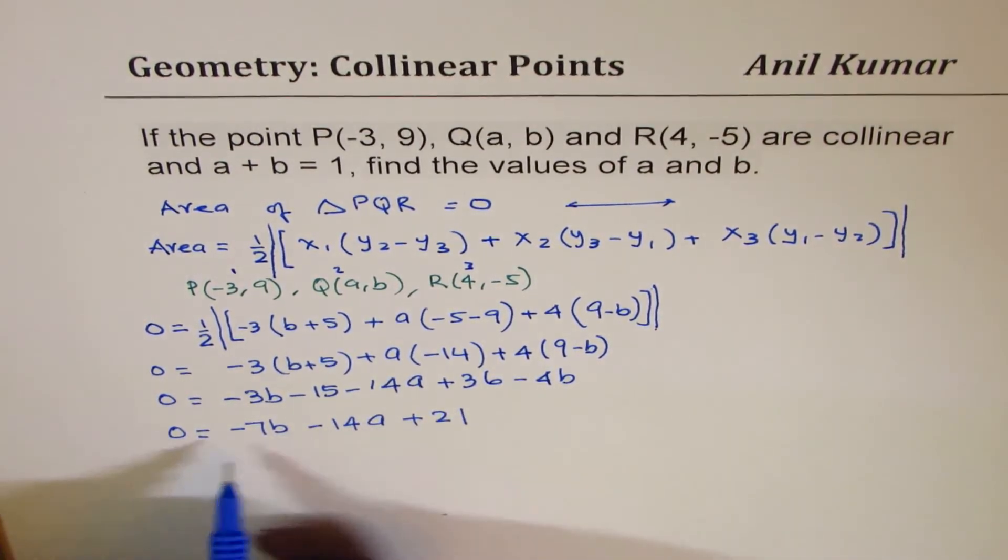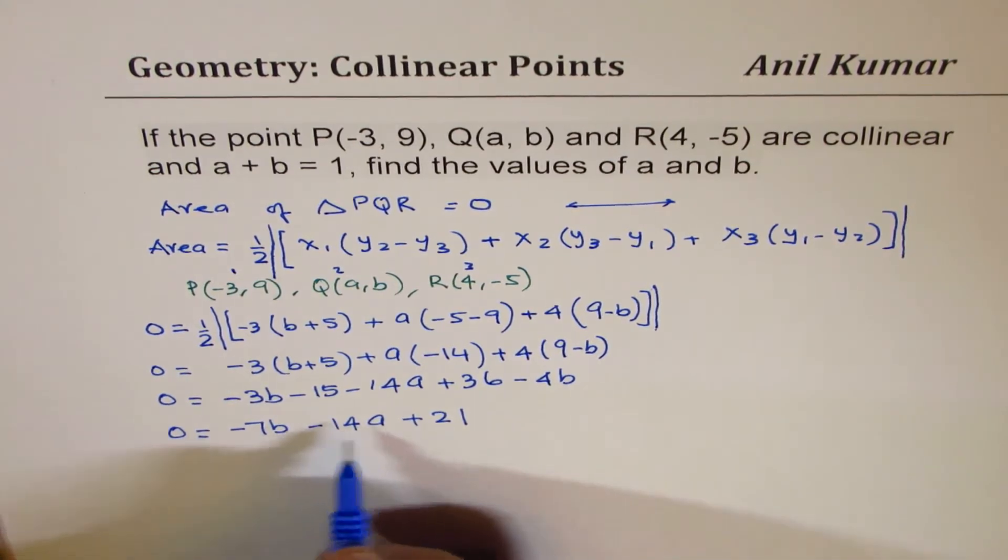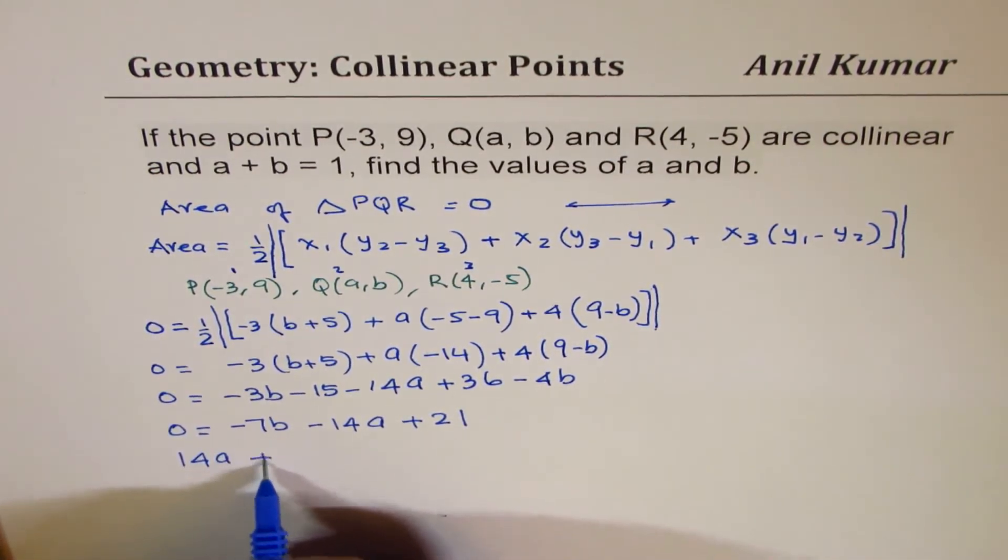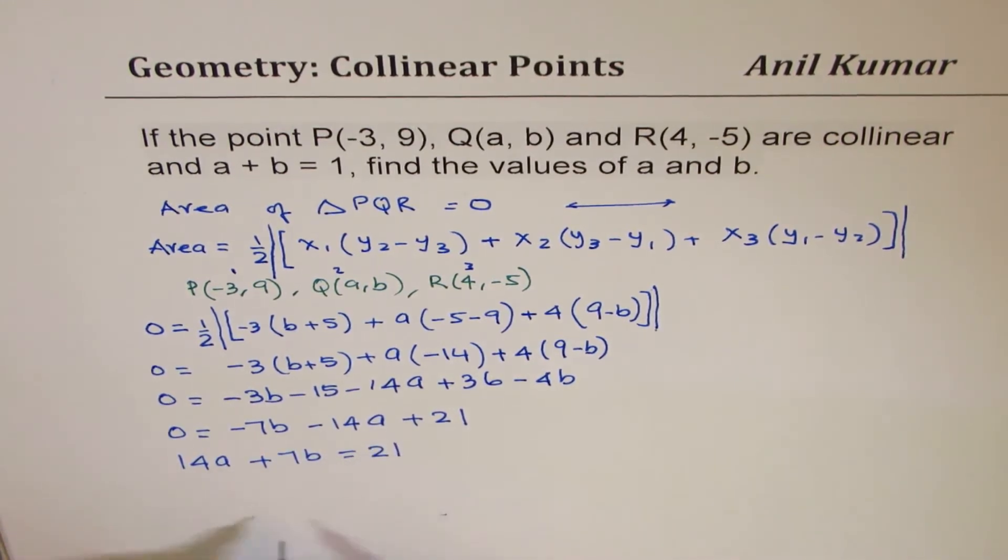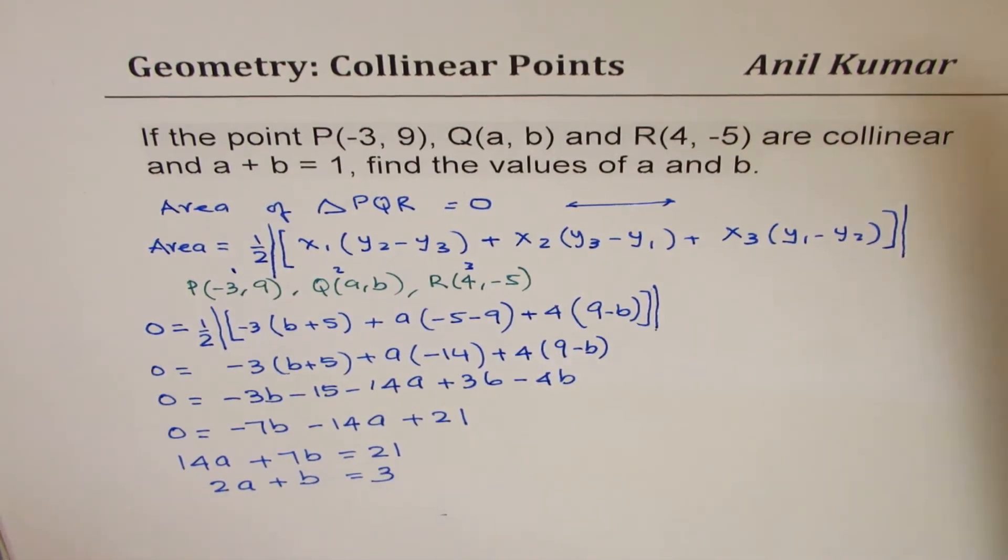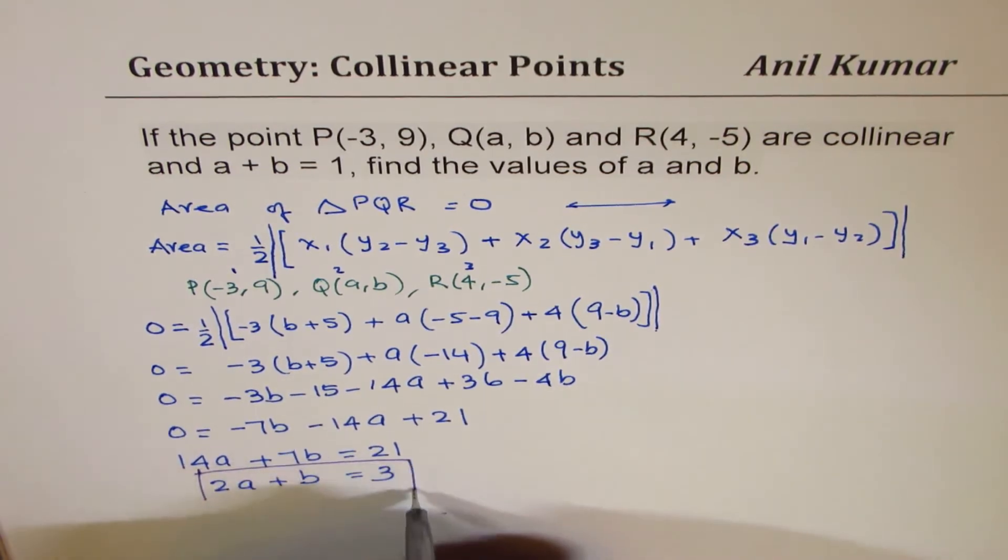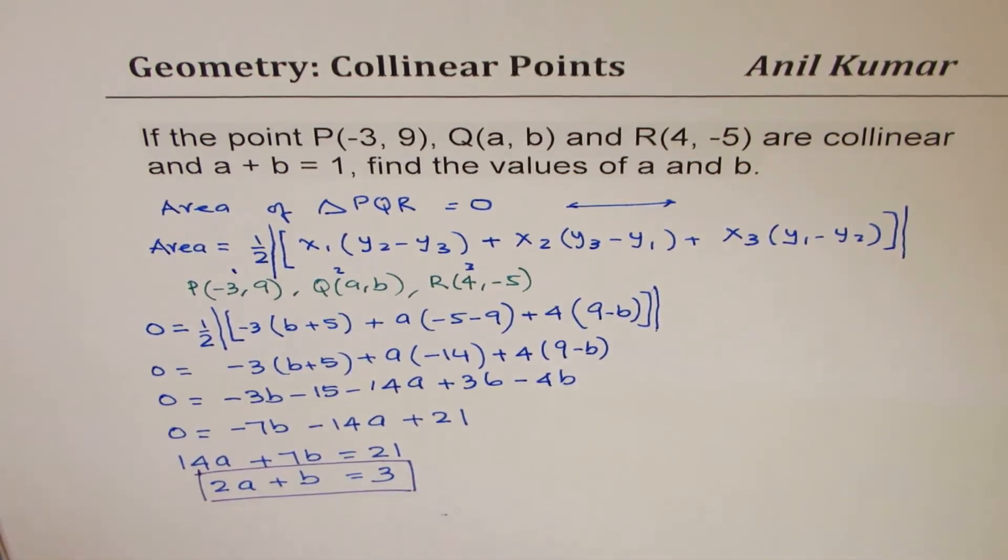Now we can rearrange bringing these terms to the left side. We have 14A plus 7B equals to 21. Dividing by 7, we get 2A plus B equals to 3. So we get an equation relating A and B, which is like this.